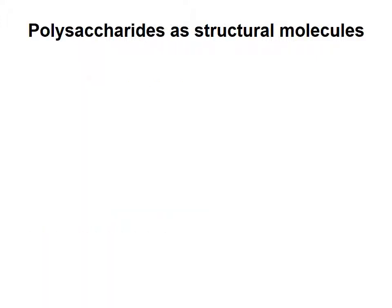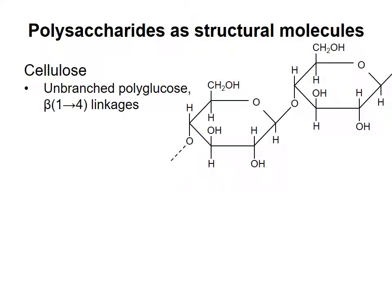Polysaccharides can also be used for structural purposes. Cellulose, a rigid molecule found in plant cell walls, is a linear polymer of glucose monomers joined via beta-1,4 linkages.